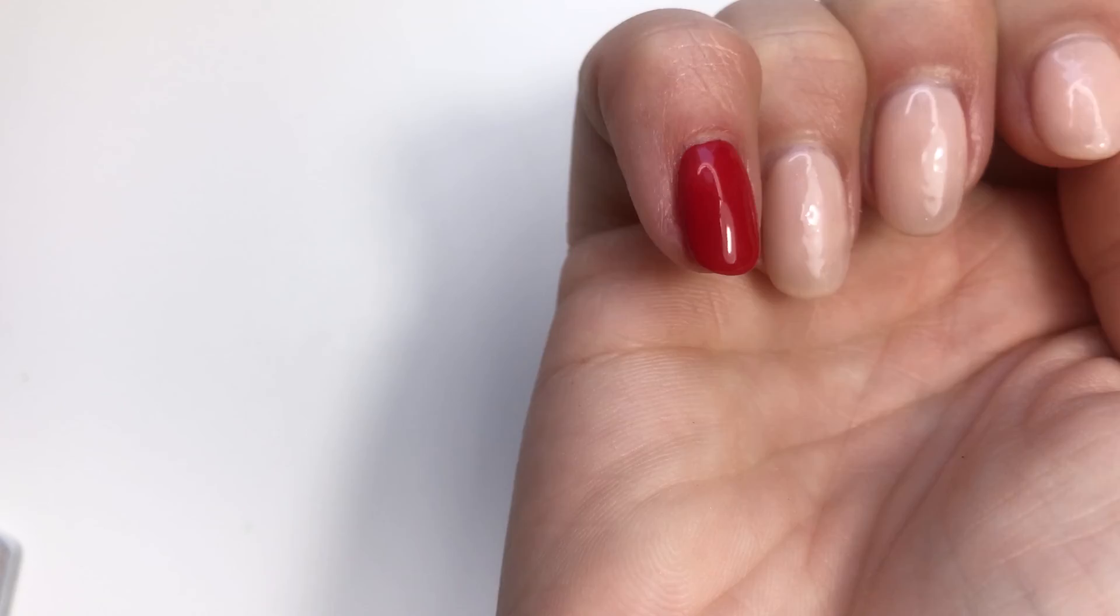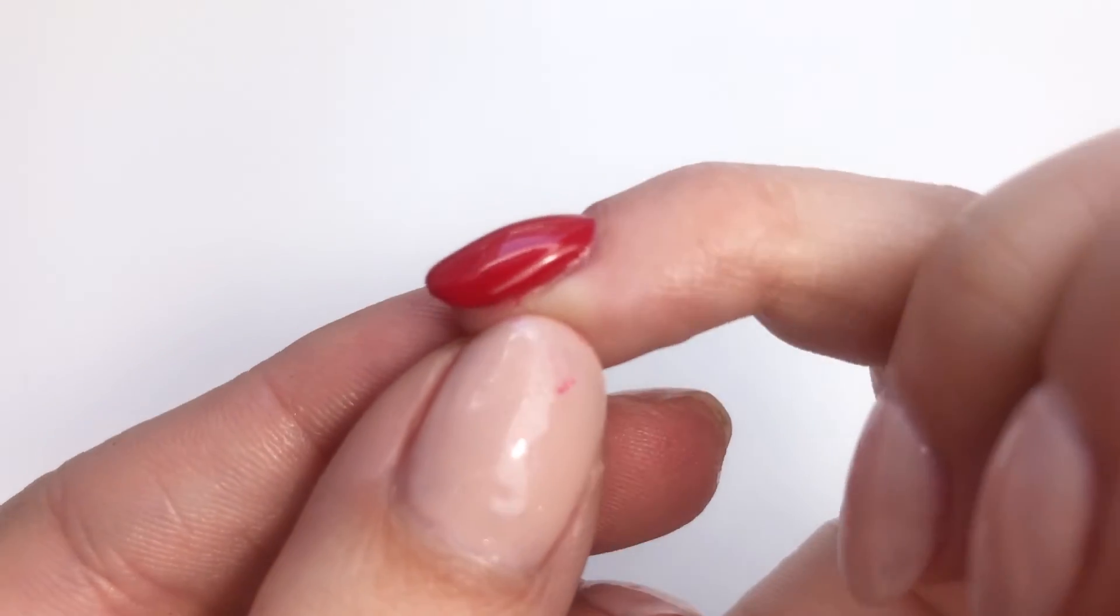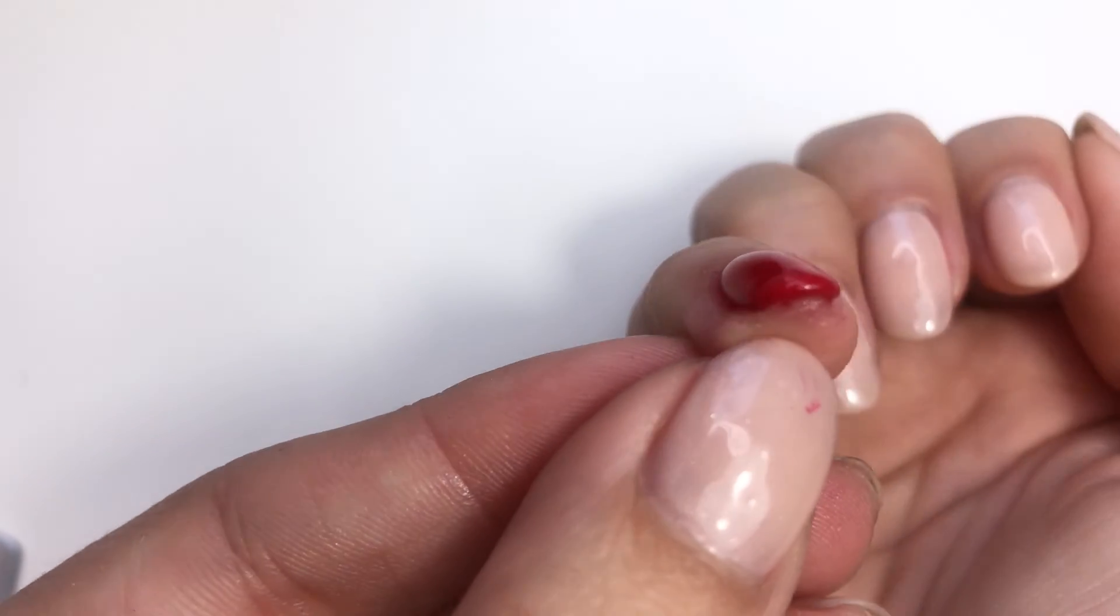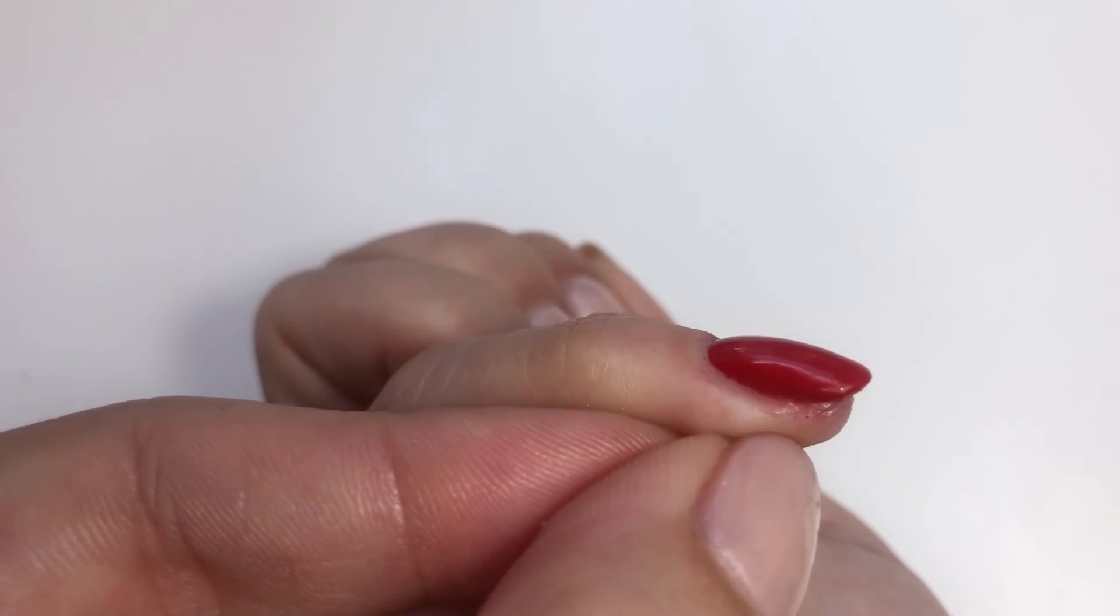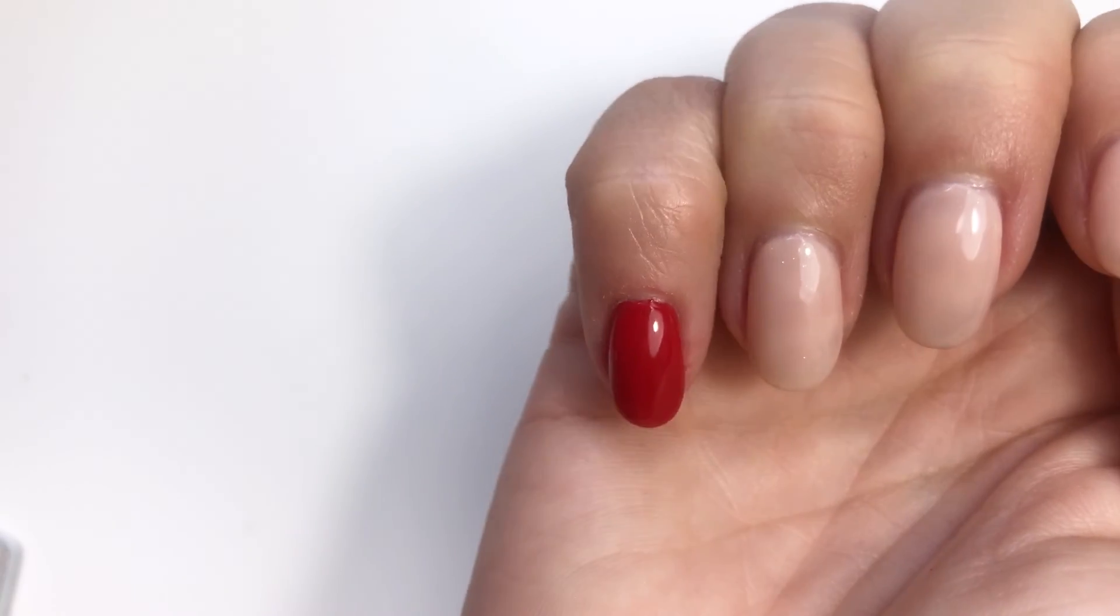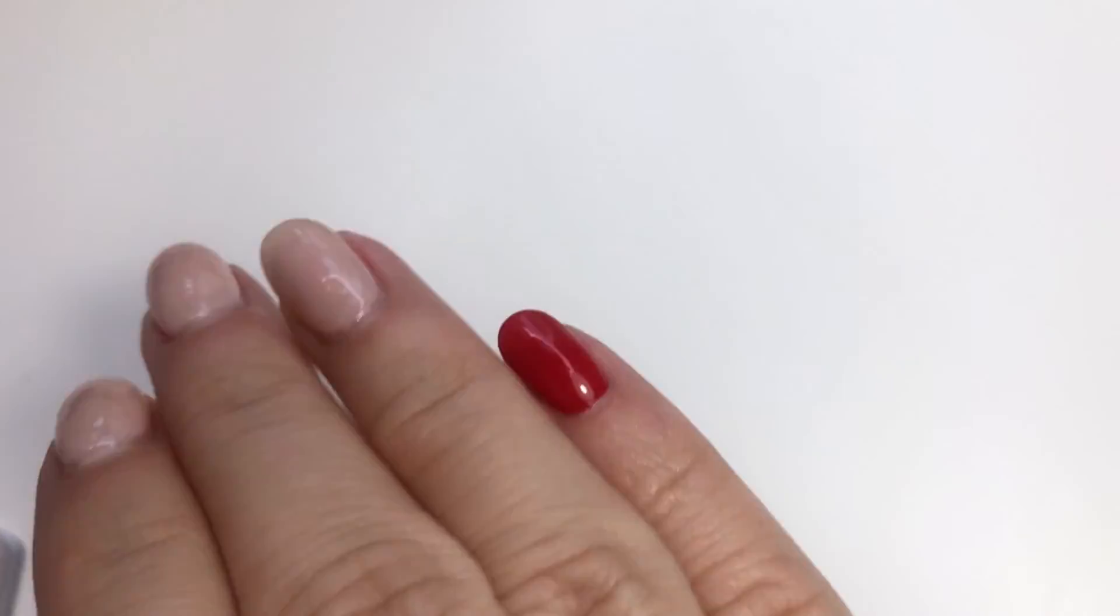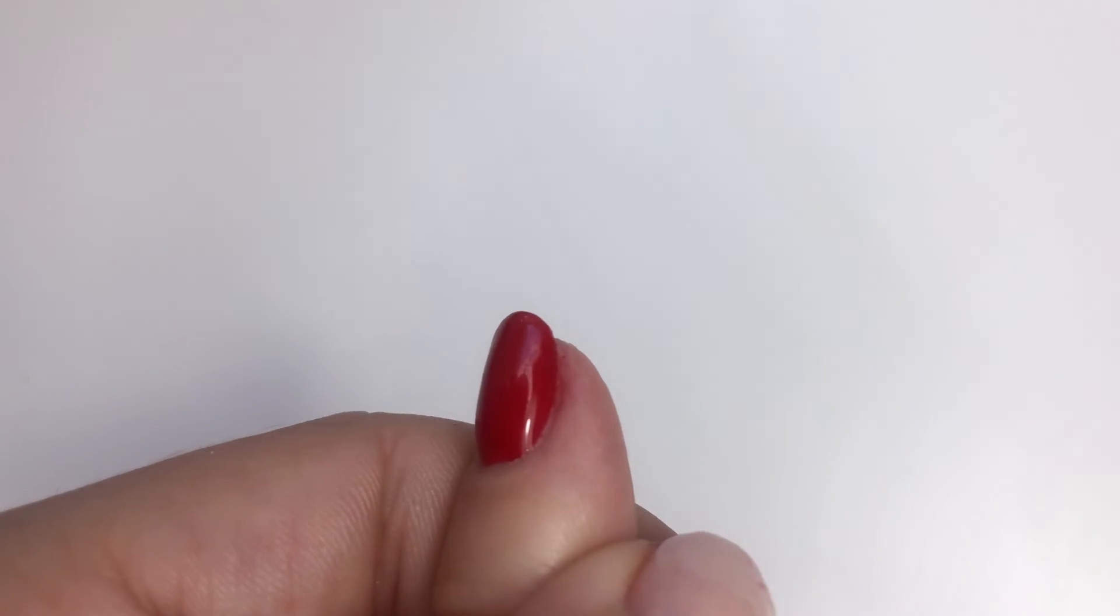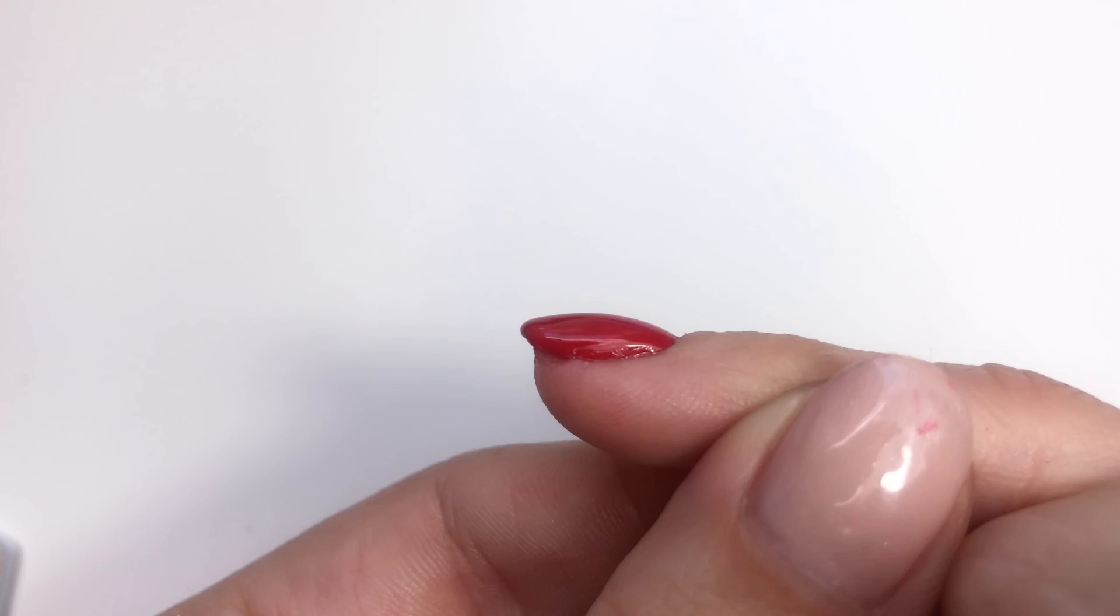As you can see this is the final result. I know for some of you this may look a bit thick but believe me it's better to be thick and not broken rather than to you know break it off again. We have a correct apex placed and the nail looks like it's gonna be really strong. All the side walls are completely smooth and covered in polish.